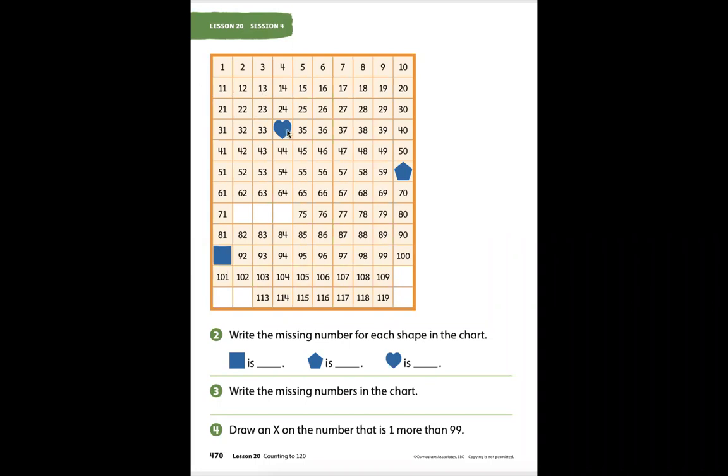Look at your 120 chart. You can see that there are missing numbers here and here. There are three missing numbers here. Here. Lots of missing numbers. It's our job to be able to look at 120 chart and see what is missing.